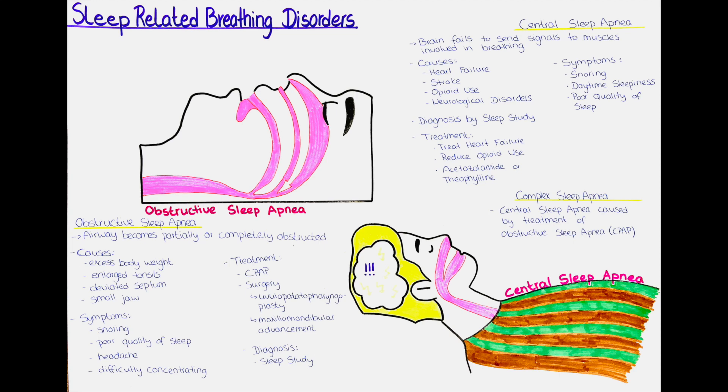The three main types of sleep-related breathing disorders are obstructive sleep apnea, central sleep apnea, and complex sleep apnea syndrome. We will go through the different types individually in the following parts. At the end of the video, we will make a comparison of obstructive sleep apnea and central sleep apnea to really highlight the key differences.